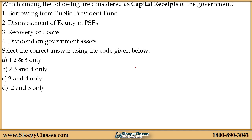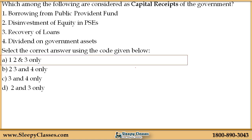Next question: Which among the following are considered as capital receipts of the government? You know there are two budgets — current and capital. The options are: 1. Borrowing from public provident fund. 2. Disinvestment of equity in public sector enterprises. 3. Recovery of loans. 4. Dividend on government assets. Which of these are capital receipts? The right option is one, two and three only.